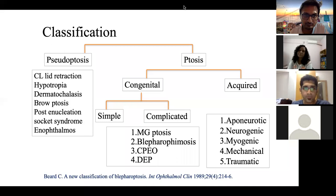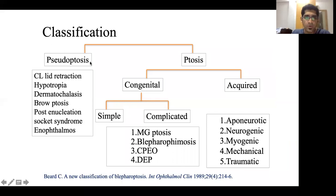A common examiner question is: what is pseudoptosis? Pseudoptosis is apparent but not true ptosis, caused by certain ipsilateral or contralateral conditions such as enophthalmos, hypotropia, or contralateral eyelid retraction — and there are various conditions that can produce this appearance.